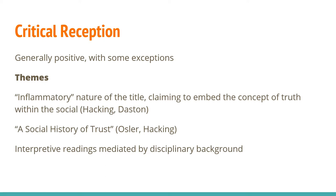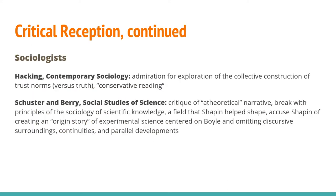Now we move on to the critical reception of A Social History of Truth. It was generally positive with some exceptions, and the interpretive readings by reviewers were definitely mediated by their disciplinary background. Looking at reviews by sociologists — this is the field from which Shapin received the sharpest criticism — Schuster and Barry accused him of being atheoretical and abandoning principles of the sociology of scientific knowledge, a field that Shapin helped shape. They felt that he was too focused on Robert Boyle as an origin story for experimental science to the exclusion of his discursive surroundings, continuities from earlier history, and parallel developments. Others like Hacking expressed admiration for Shapin's illustration of the construction of trust norms.